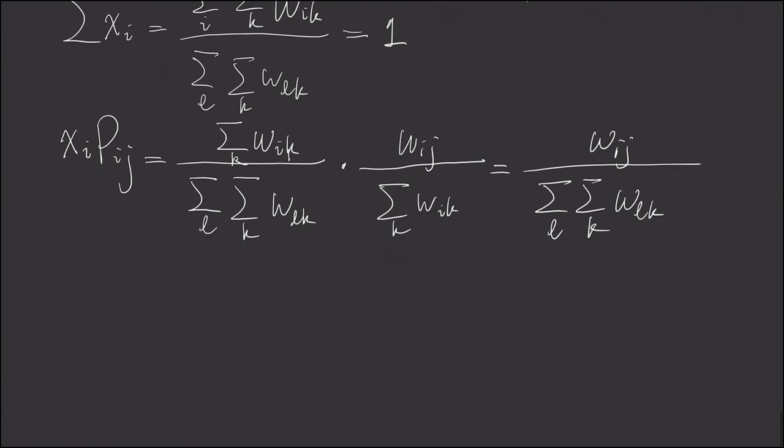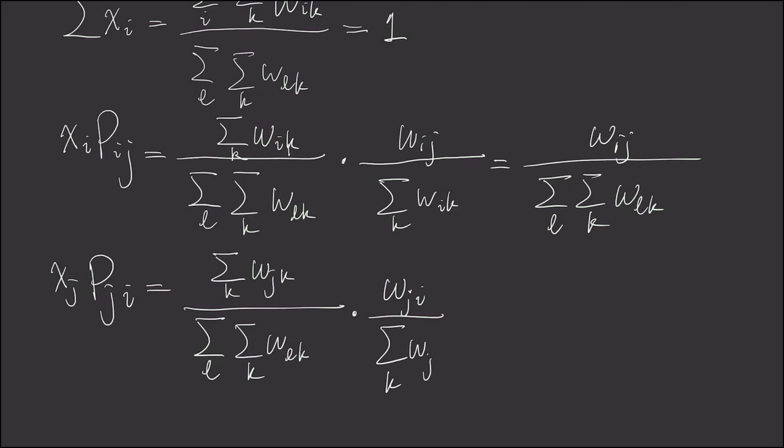And now, similarly, when we consider xj pji, this is the sum of edges coming out from j, and the denominator is actually the same. It's the sum of all the edge weights from all nodes. And then multiply with wji, and we sum all the edges from node j. And apparently, this time and this time, they cancel. And what happens is, we end it with wji, divided by the sum of all the edge weights.